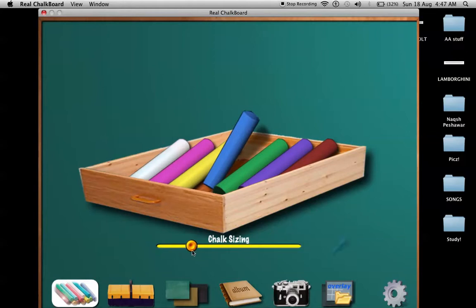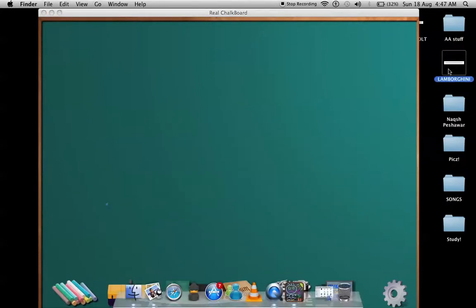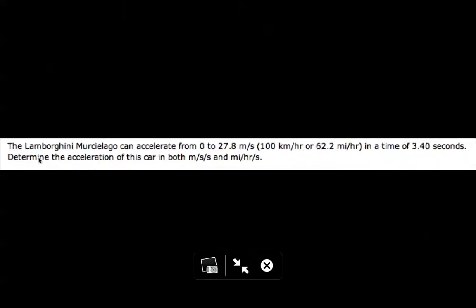Let's see our first question. The Lamborghini Murciélago can accelerate from a velocity of 0 to a velocity of 27.8 meters per second in a time of 3.40 seconds.